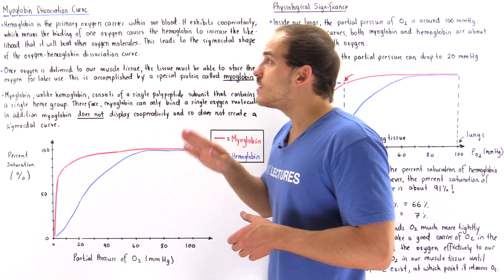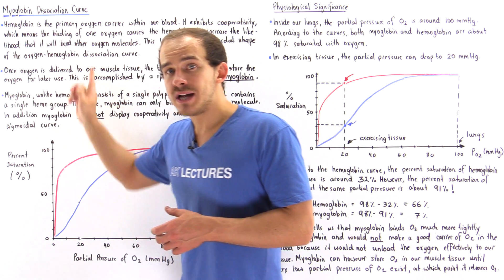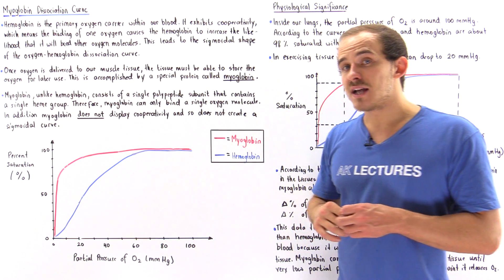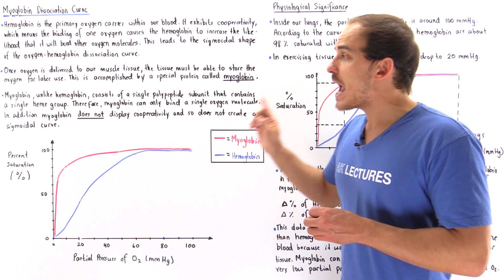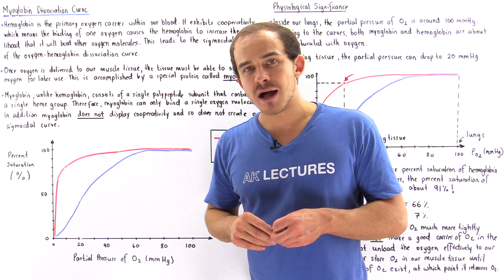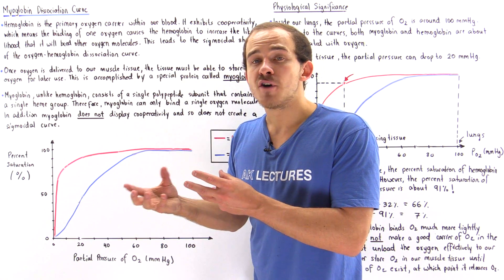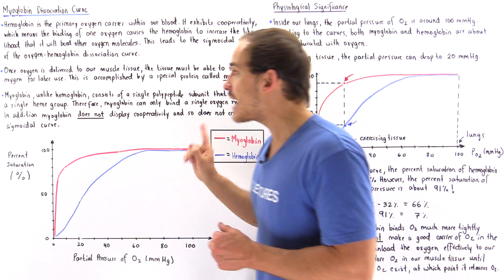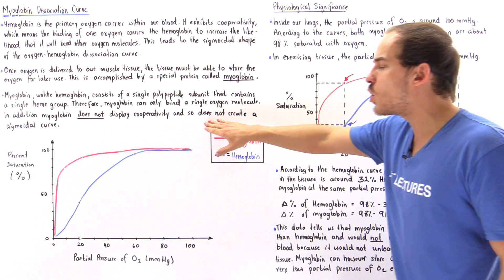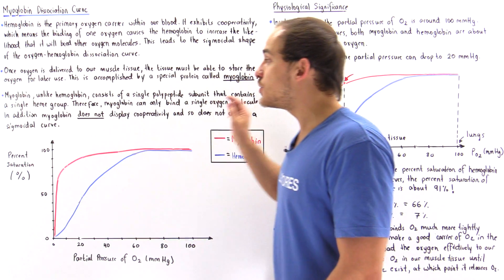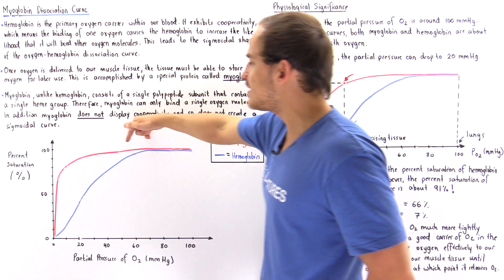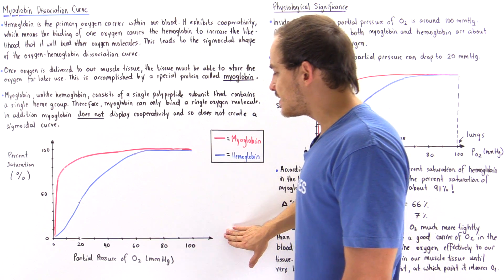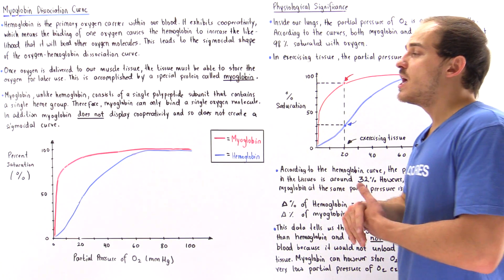If we compare the structure of hemoglobin to myoglobin, we'll see that myoglobin, unlike hemoglobin, consists of only a single polypeptide subunit, and that single polypeptide subunit contains one heme group. That means myoglobin can only bind a single diatomic oxygen molecule. Because we don't have more than one polypeptide subunit within myoglobin to interact and create cooperativity, myoglobin will not display cooperativity and will not create a sigmoidal curve. The shape of the oxygen-myoglobin dissociation curve is given by the red curve, where the Y-axis is percent saturation of myoglobin and the X-axis is the partial pressure of oxygen in millimeters of mercury.